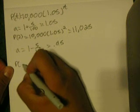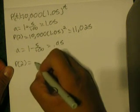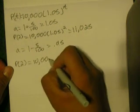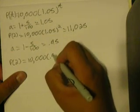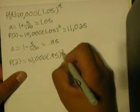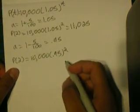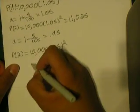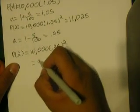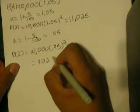it would be P(2) = 10,000 × 0.95², which equals 9,025.